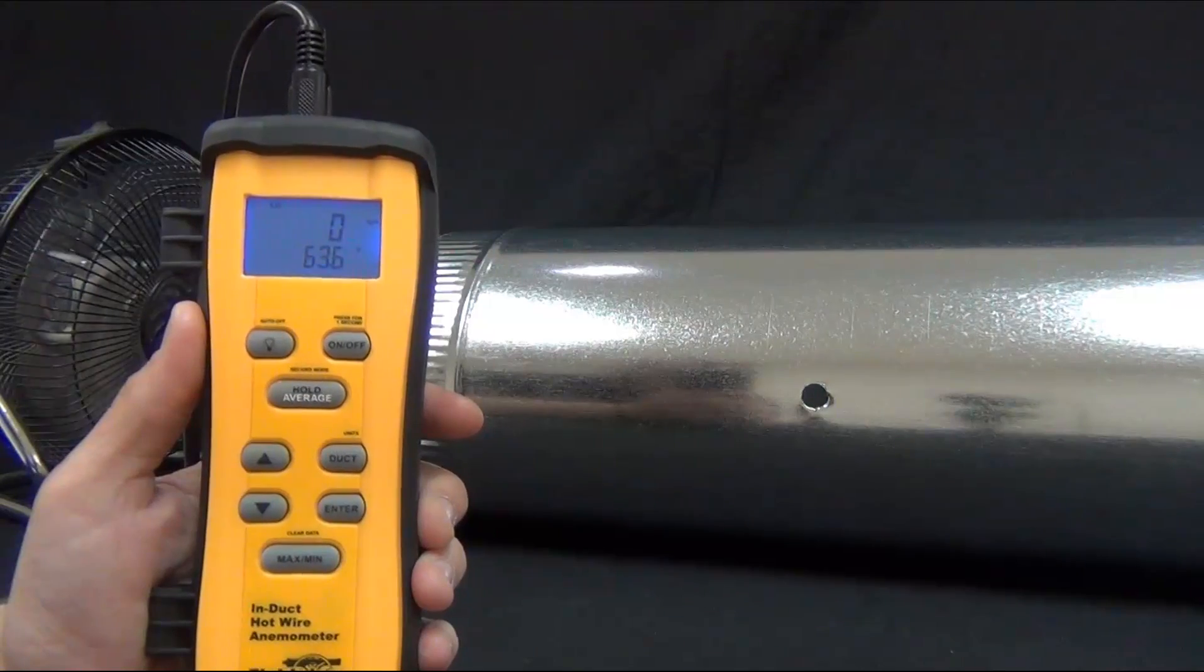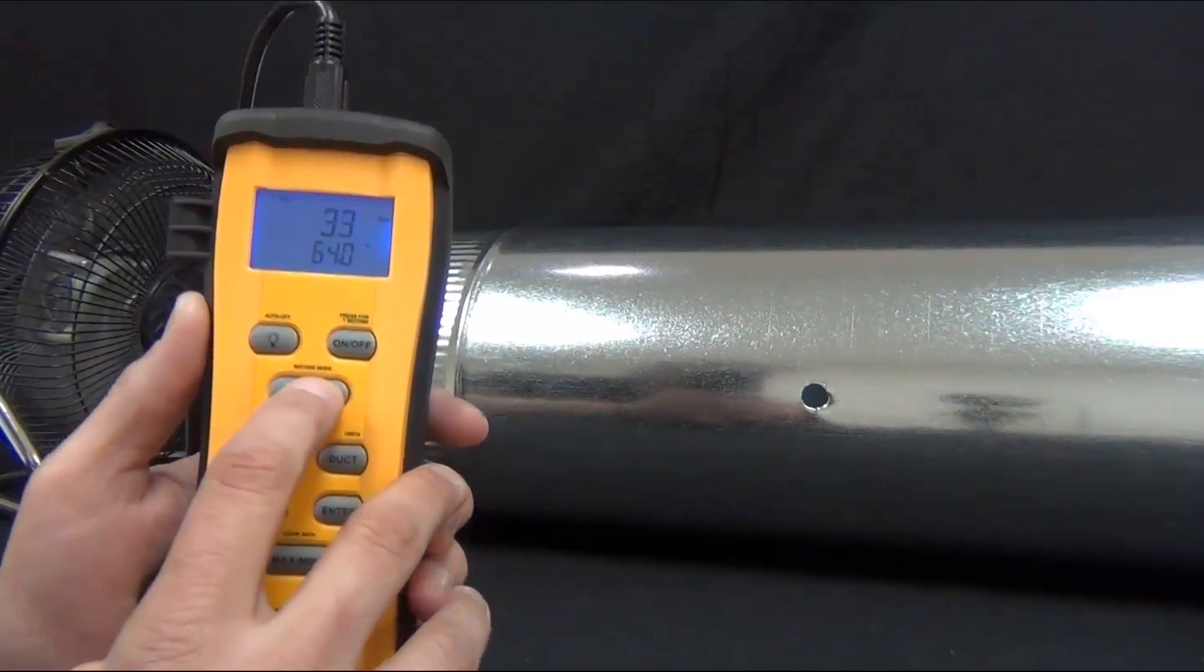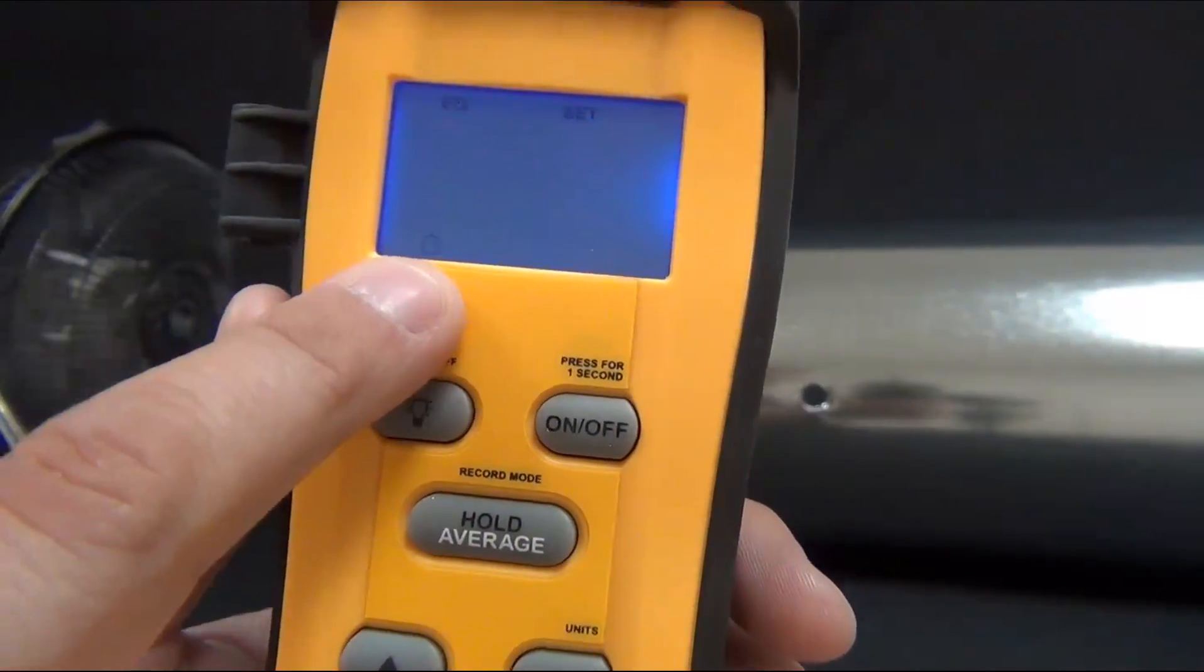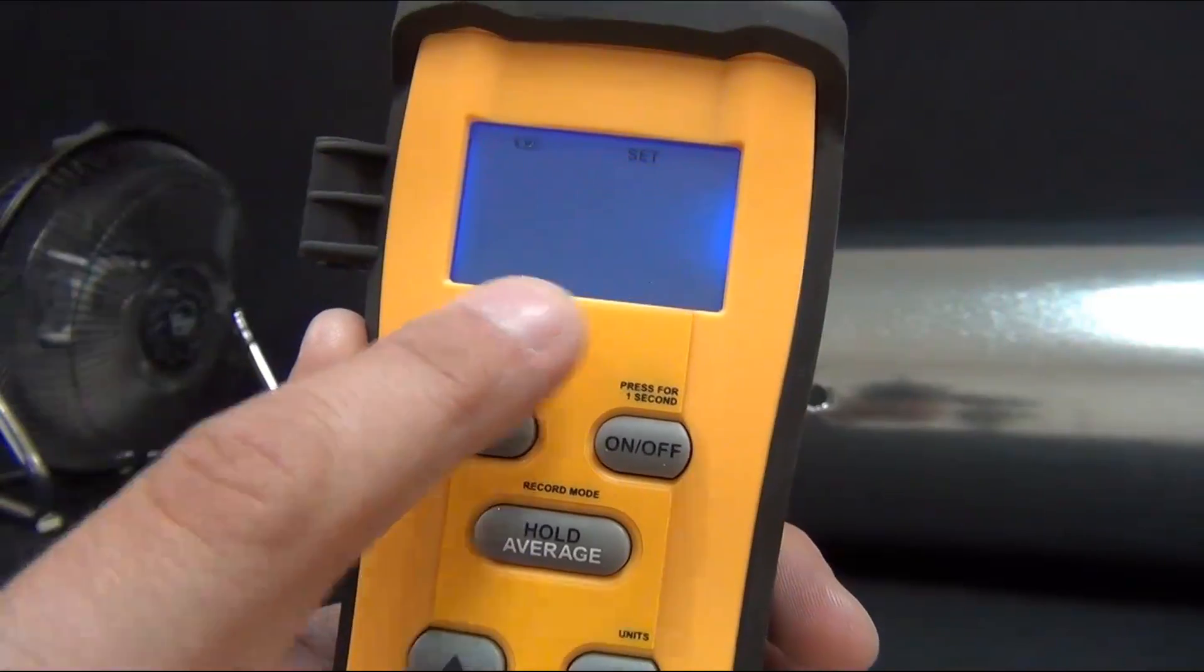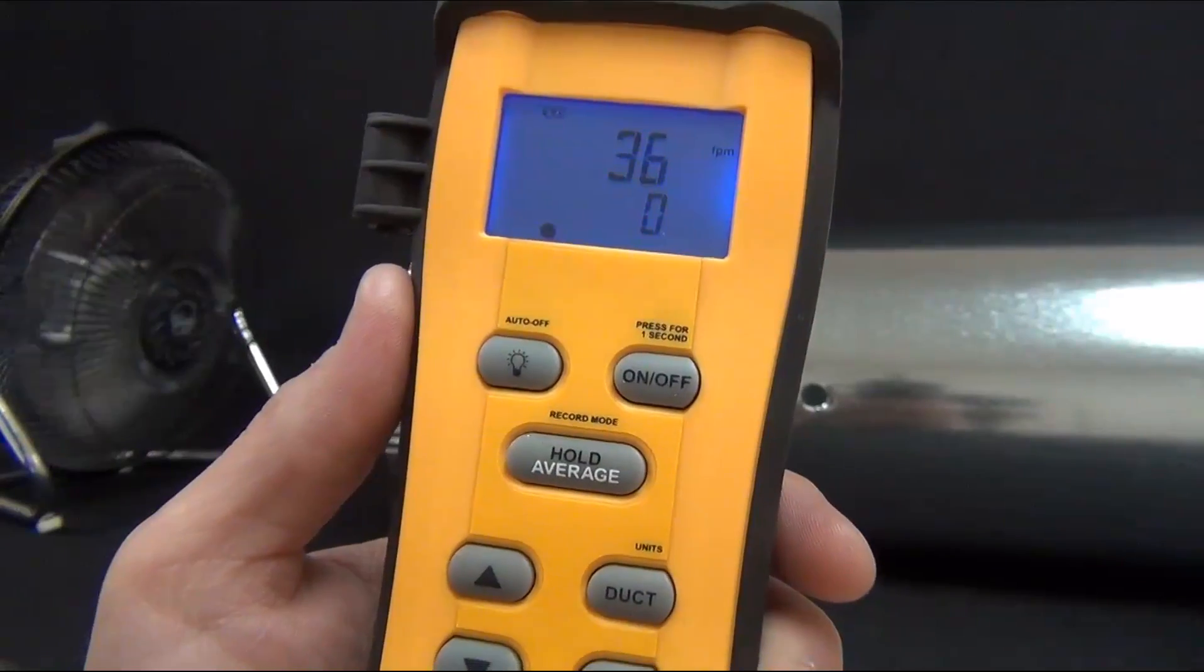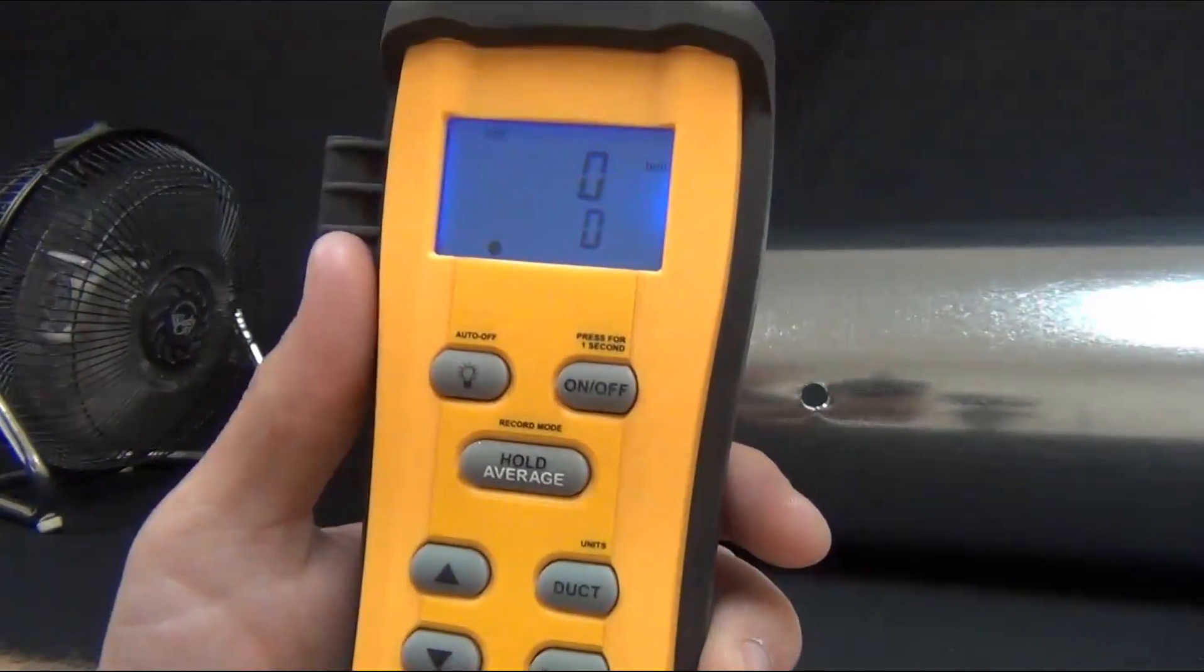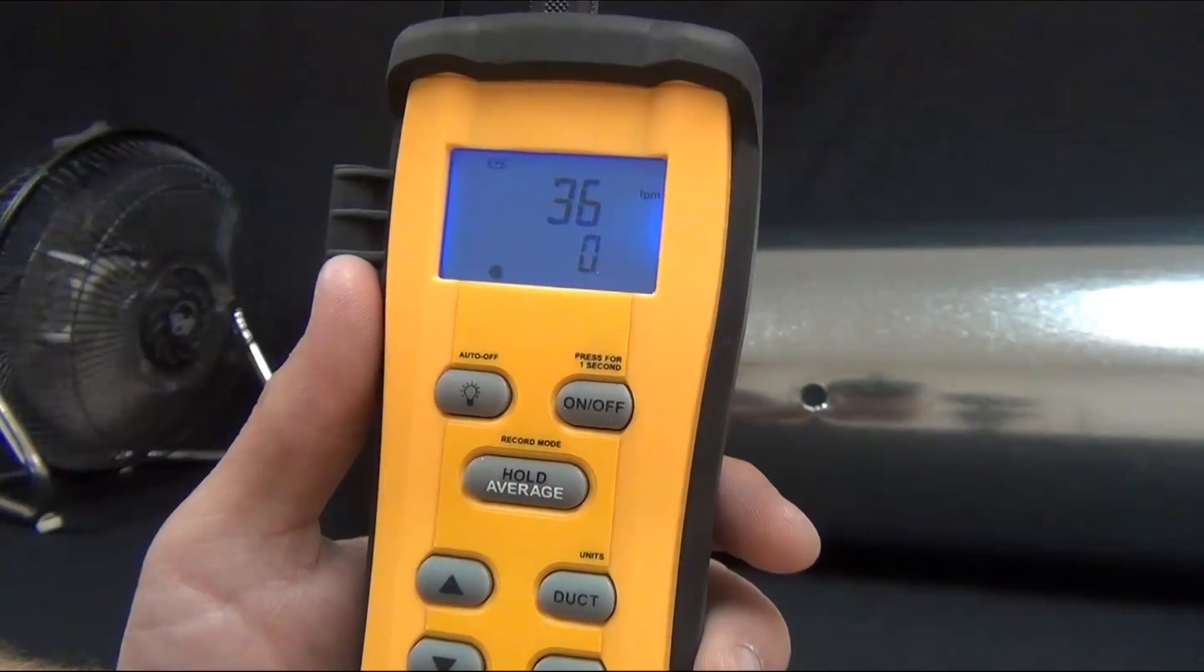Now I'm going to show you getting the average CFM using the point method. I'll press and hold the record mode button again. It's going to still show me that timer for the timed average mode. To switch modes, I just press the up arrow and I can select my point method. I'm going to press enter to get that. Now it notifies that I'm in the point method mode with that symbol right there. It's reading feet per minute on the top display and number of recordings or number of points that I measured on the bottom display.